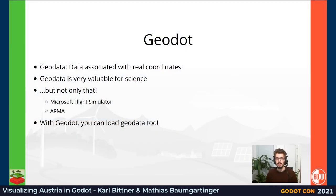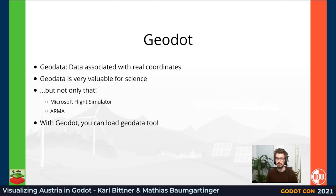Now let's go into detail on Geodaw and geospatial data in general. Geodata is just data with a spatial component, meaning it is bound to real-world coordinates — a simple example would be a map. This is very valuable for science; entire fields build on working with geodata. The Microsoft Flight Simulator, as well as games like Arma, show that realistic games can greatly benefit from using real-world data. It's better and easier to get realistic graphics when you work with real data, and with Geodaw you can easily load geodata into your own projects too.